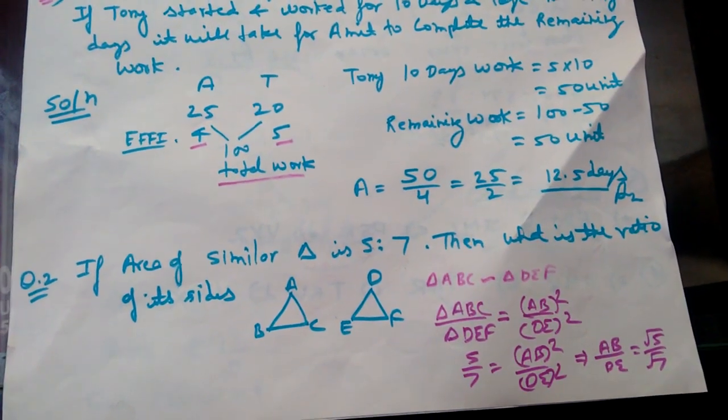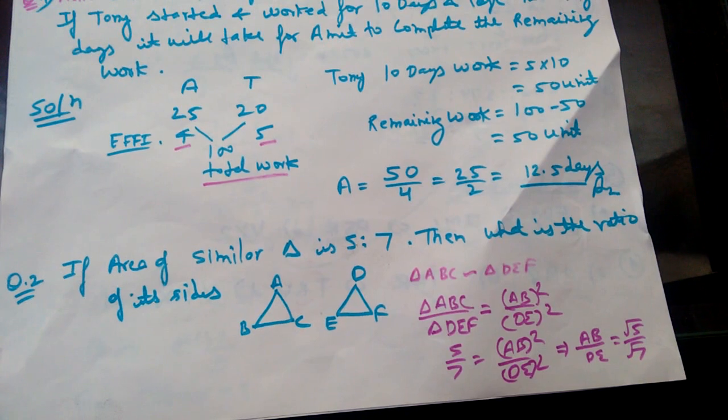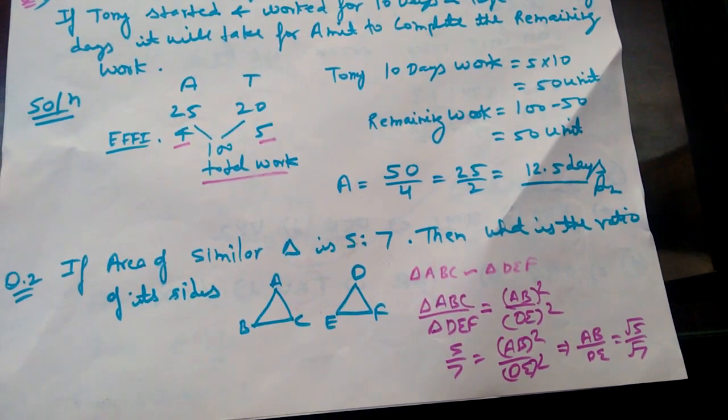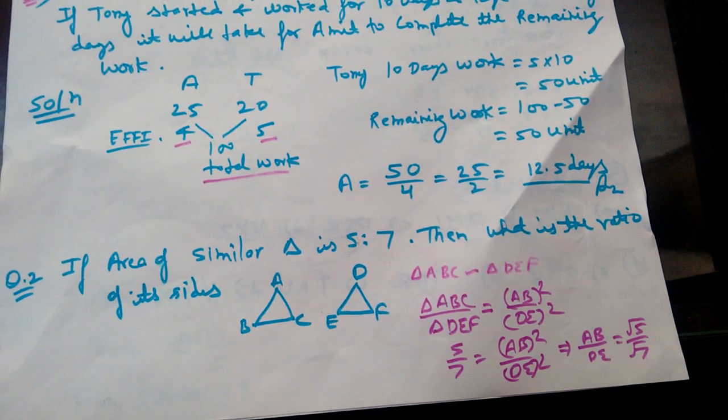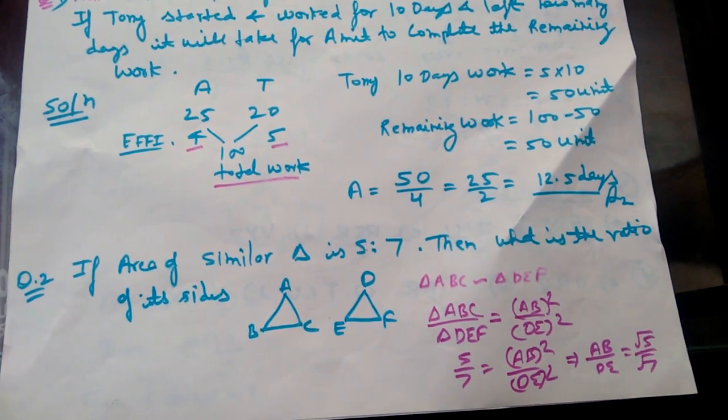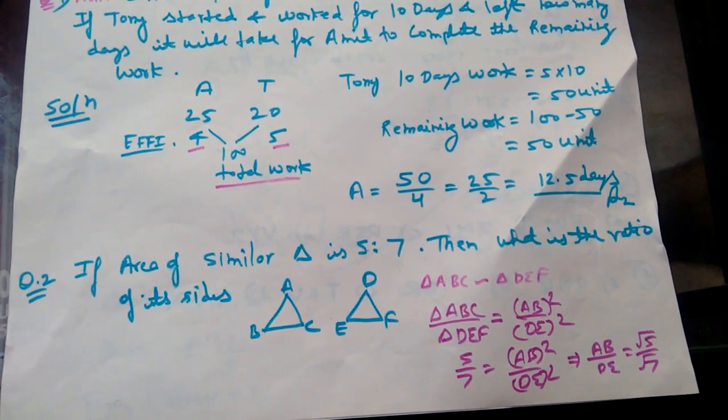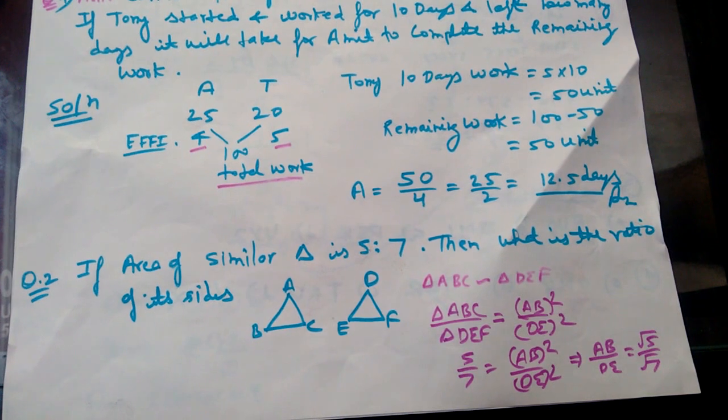The simple question was, if the area of similar triangles came from 5 to 7, what is the ratio of their sides? So this is a theorem that if triangle ABC is a figure, which is similar to DEF. So this is a triangle similarity with triangle ABC upon DEF.